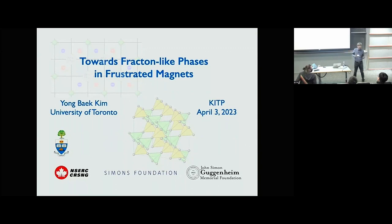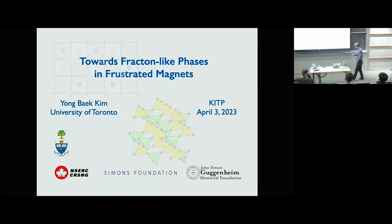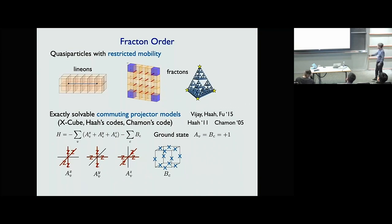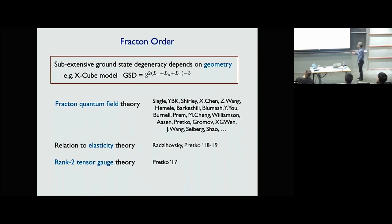This work is about whether it's possible to come up with a realistic theoretical model that could be realized in real material — that's basically the motivation. We want to have quasi-particles with restricted mobility. One explicit example already discussed is the X-cube model. The downside is that you have to deal with 12-spin interactions, which is presumably hard to achieve in real systems. A second interesting property is the sub-extensive ground state degeneracy that depends on the geometry of the lattice.